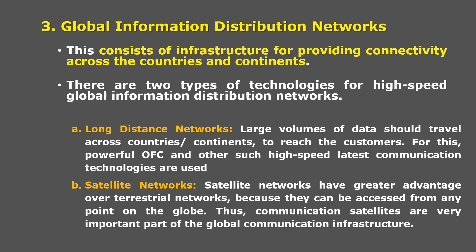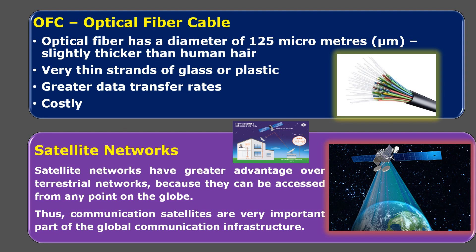Sometimes undersea optical fiber cables are also required. The second type is satellite networks, which have a greater advantage over terrestrial networks. Terrestrial networks are networks laid on the surface of the earth. Satellite networks can be accessed from any point on the globe, so communication satellites play a very important role in global communication infrastructure. Optical fiber cable has a diameter of 125 micrometers — it is slightly thicker than human hair. These very thin strands of glass or plastic provide greater data transfer rates.